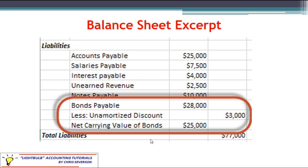On the balance sheet in the liability section, you would have bonds payable less any unamortized discount, and that would give you the carrying value of the bonds. For a discount bond it's always going to be less than the actual liability until maturity, where there will be no discount left to amortize and the carrying value and the bonds payable amount will be one and the same.